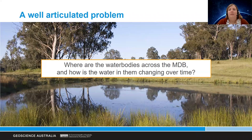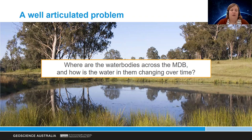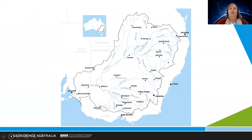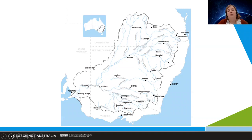The first question posed by some of our stakeholders was: you've got access to this satellite archive — can you use it to tell us where water bodies are across the Murray Darling Basin and how the water in them is changing over time? For those not in Australia, the Murray Darling Basin is a very large inland catchment covering about a fifth of the continent, with a huge amount of agricultural production.